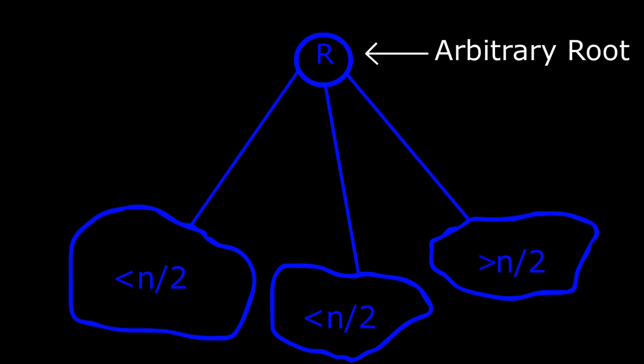But if one subtree has size greater than n/2, we know that the centroid is in that subtree. If you think about it, it's quite intuitive. And you also know that there cannot be more than one subtree with size greater than n/2, because if one subtree has greater than n/2 nodes, we have less than n/2 nodes left for the other subtrees.